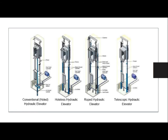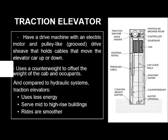Although the different types of hydraulic elevators are somewhat similar in appearance, you can see that there are varying parts where some have features that others don't. Moving on to traction elevators: a traction elevator has a drive machine with an electric motor and a pulley-like groove drive sheave that holds cables moving the elevator car up or down. It uses a counterweight to offset the weight of the cab and occupants. Compared to hydraulic systems, traction elevators use less energy, serve mid- to high-rise buildings, and provide smoother rides.